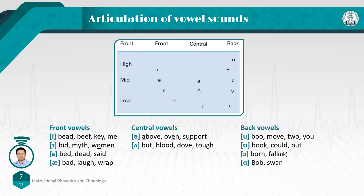What about back vowels? 'oo' as in 'boo,' 'move,' 'to,' or 'you' — all of them are back vowels and they are high. The next back vowel is a shorter 'oo,' as in 'book,' 'could,' or 'put.' Next is 'aw,' as in 'born' or the British pronunciation of 'fall.' And finally, we come to the last back vowel, which is 'aa,' as in 'bop' or 'swan.'